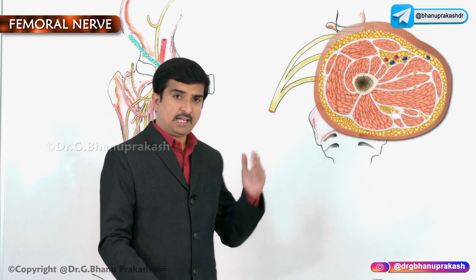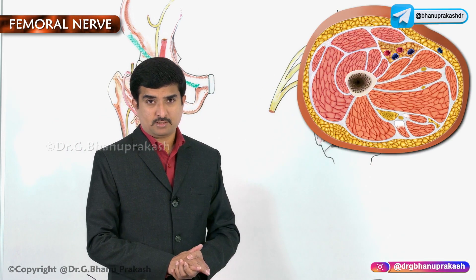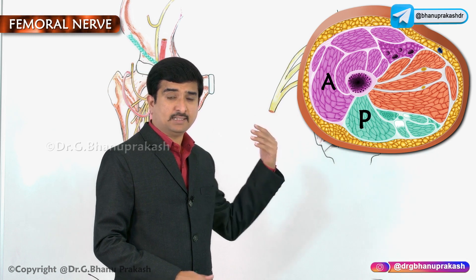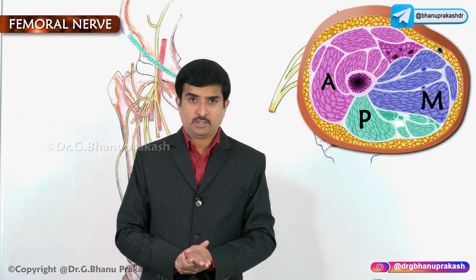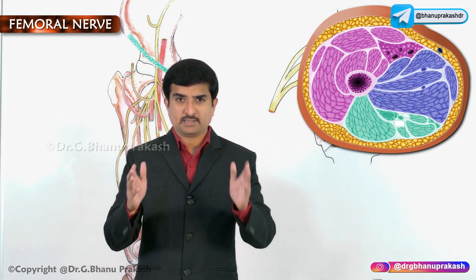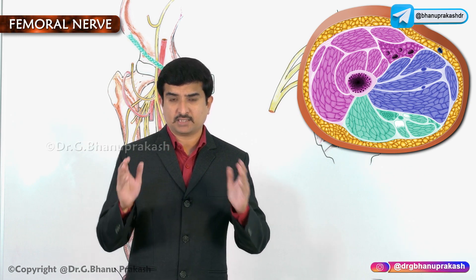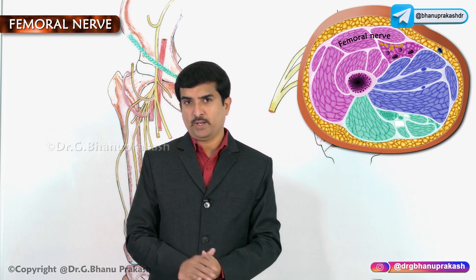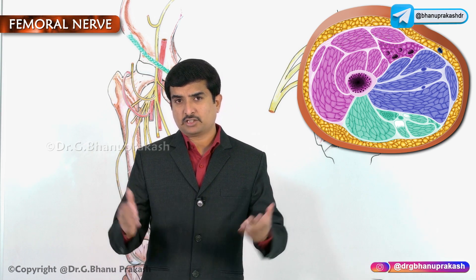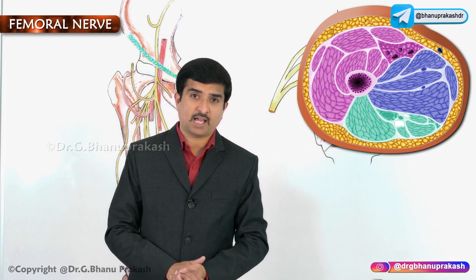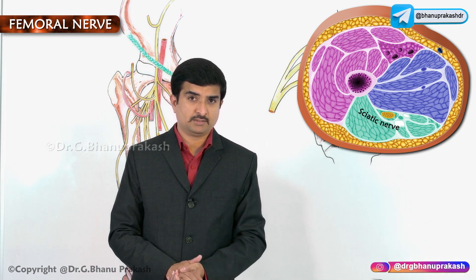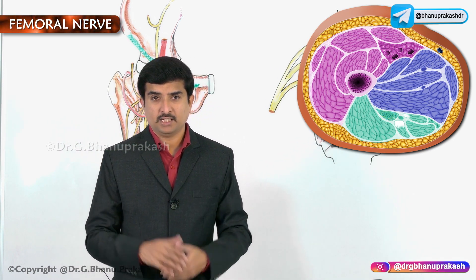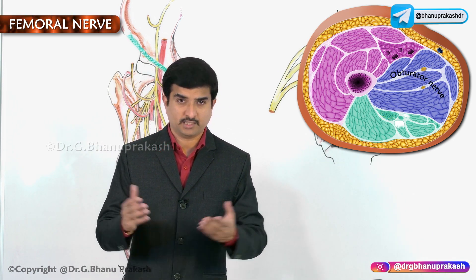The thigh has three compartments: the anterior compartment, the posterior compartment, and the medial compartment. All the muscles of the anterior compartment of the thigh are innervated by the femoral nerve. The muscles of the posterior compartment are innervated by the sciatic nerve, and all the muscles of the medial compartment are innervated by the obturator nerve.